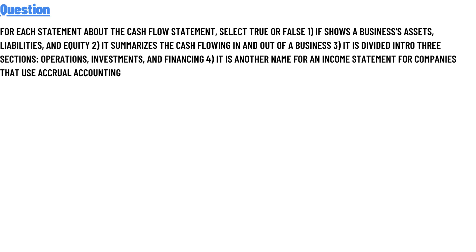Statement three: it is divided into three sections of operations, investments, and financing. Statement four: it is another form of the income statement of a company using actual accounting.